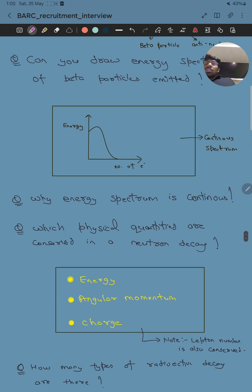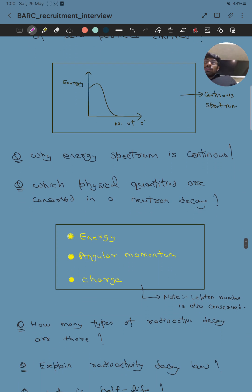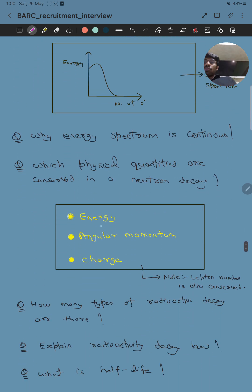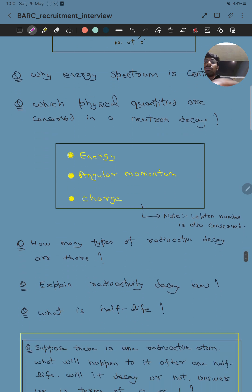Then he asked why the energy spectrum is continuous and which physical quantities are conserved in neutron decay? In this neutron decay, the energy, angular momentum, charge, these physical quantities are conserved. Also, the lepton number, which is a quantum number, is also conserved.